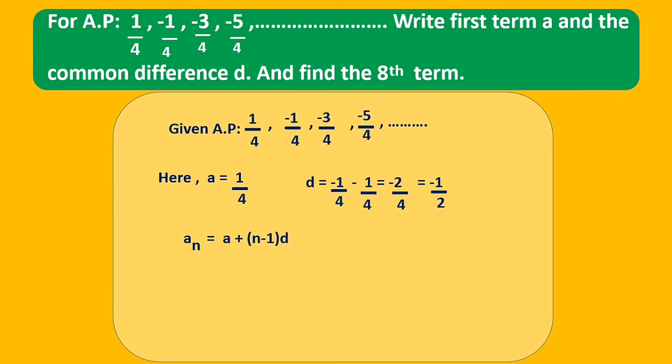So the general term of AP is aₙ = a + (n-1)d. We have to find the 8th term. So a₈ = a + 7d, equals 1/4 plus 7 times -1/2.